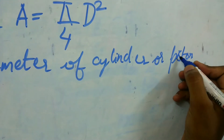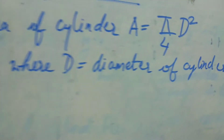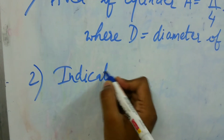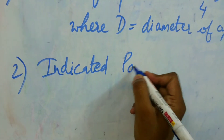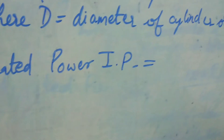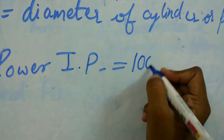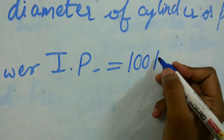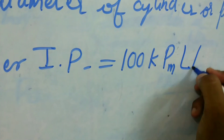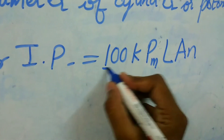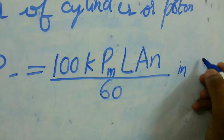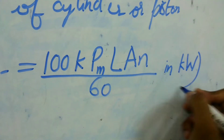The second formula is Indicated Power, also called IP, and the formula is: IP = 100 × k × pm × L × A × n divided by 60, and the unit is kilowatt.